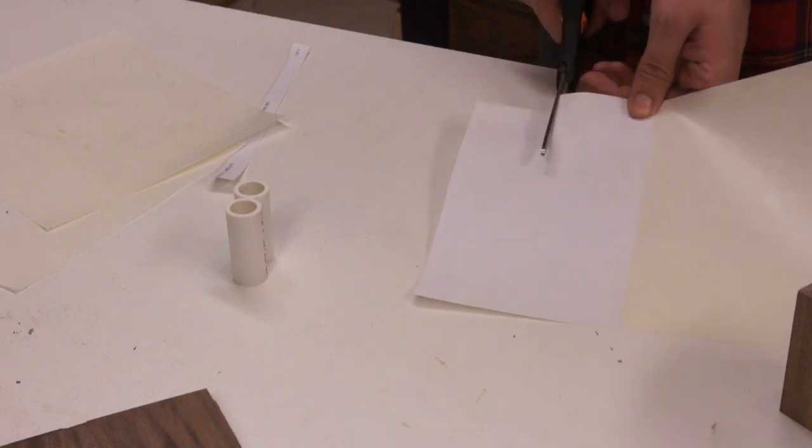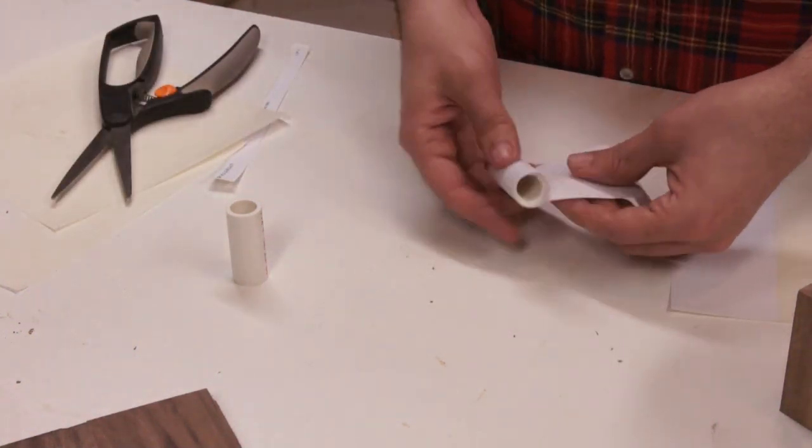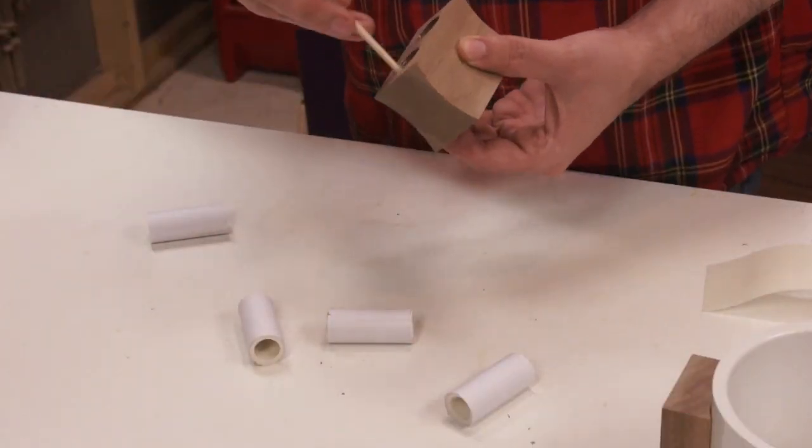The half inch PVC was a loose fit in the 7 eighths inch holes, so I wrapped it with some self-adhesive labels.